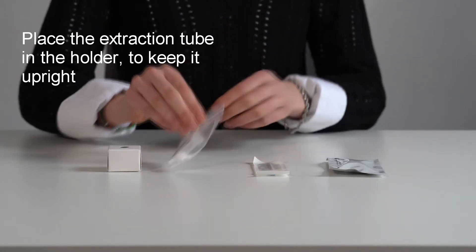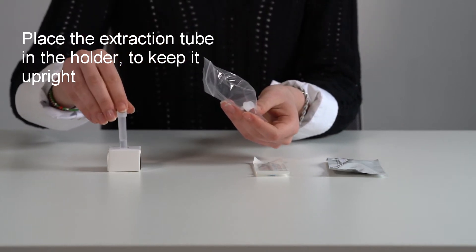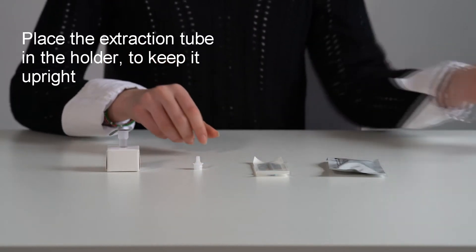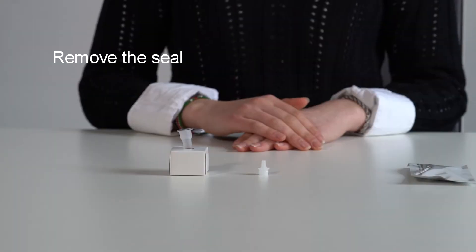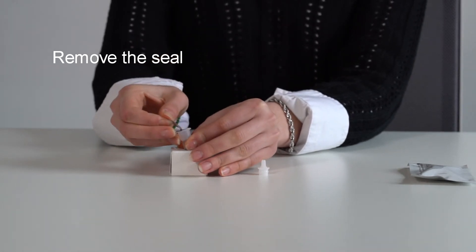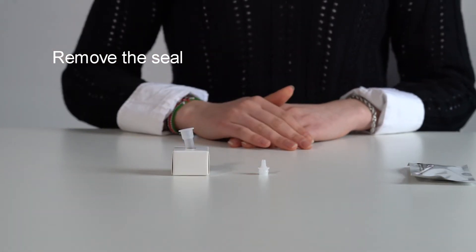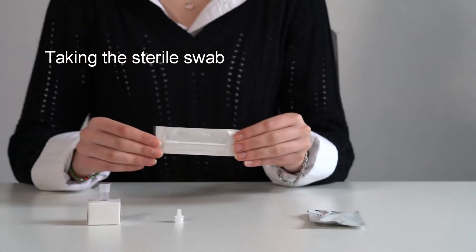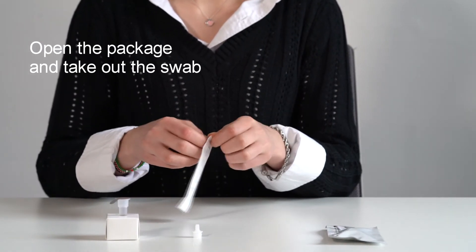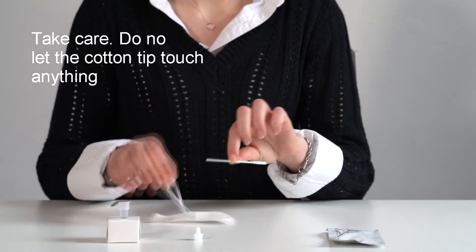Place the extraction tube in the tray to keep it upright. Check the swab in the sealed wrapper in front of you. Identify the soft fabric tip of the swab. Open the swab package and gently remove the swab.